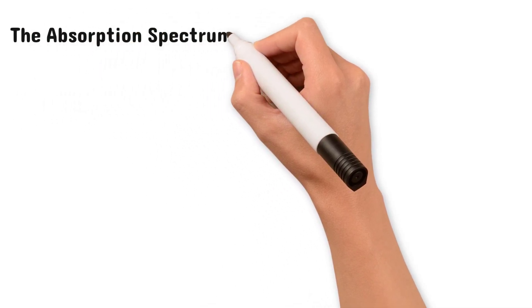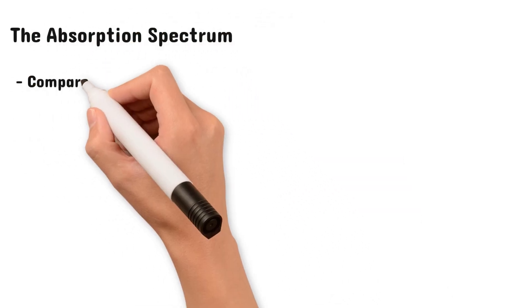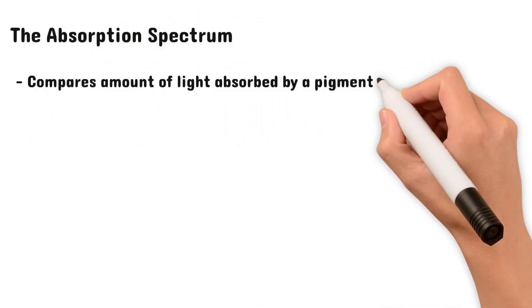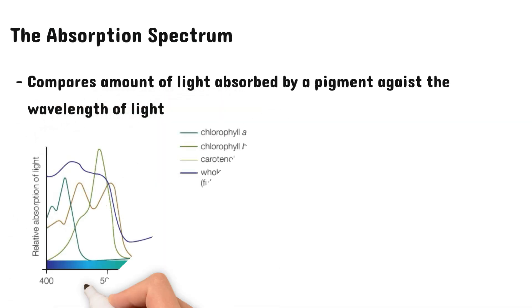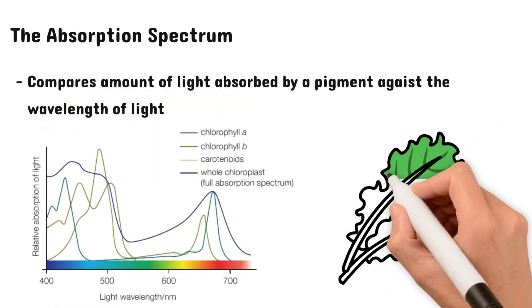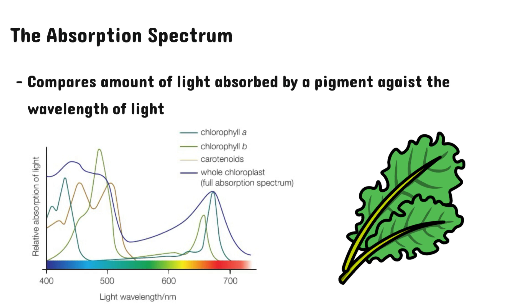The absorption spectrum is a graph which compares the amount of light absorbed by a pigment against the wavelength of light. So it tells us which light wavelengths are absorbed by which pigments.